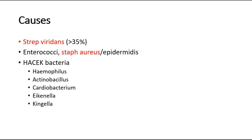These are the causative organisms of infective endocarditis. Streptococcus viridans is a common cause, accounting for more than 35% of cases. Staphylococcus aureus is also very commonly seen. These are the two main types. Others include enterococci or HACEK bacteria, a group of bacteria that are rarely seen but can also cause infective endocarditis.